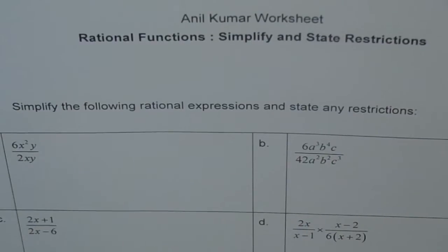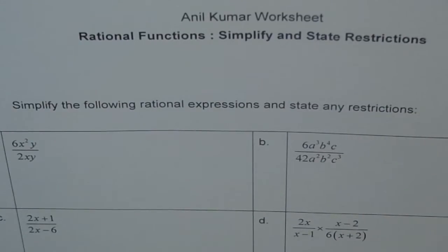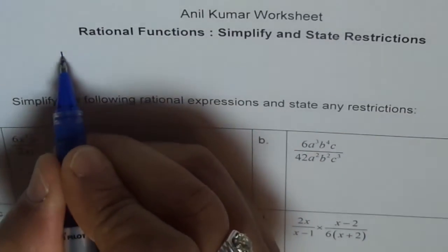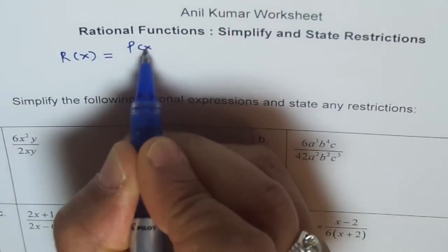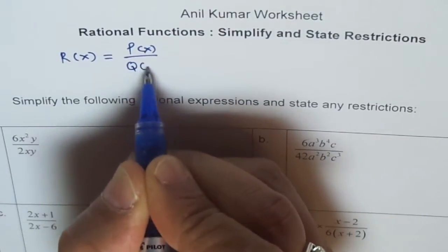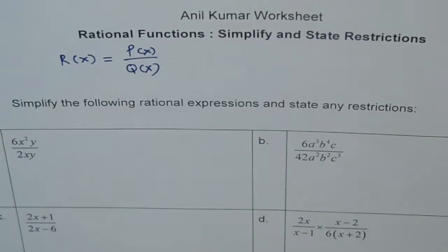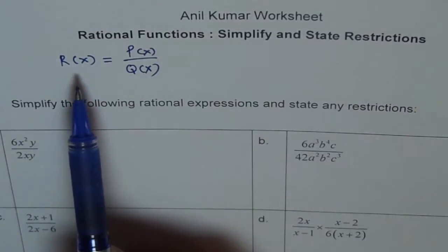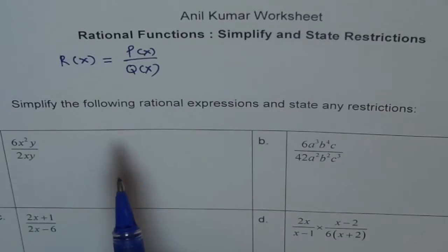Hello, let's understand what are rational functions and how to simplify them and how to state their restrictions. Rational functions in general — let's say R(x) equals P(x) over Q(x), where P and Q are polynomials. So a rational function is basically a ratio of two polynomials.